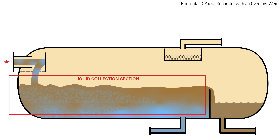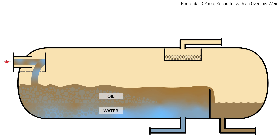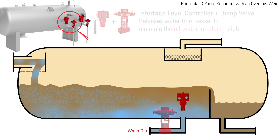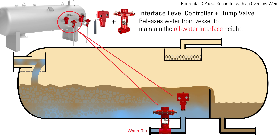In the liquid collection section of the vessel, the oil separates and forms a layer above the water. An interface level controller maintains the oil-water level, signaling a dump valve to release water from the vessel as needed to maintain the oil-water interface height.